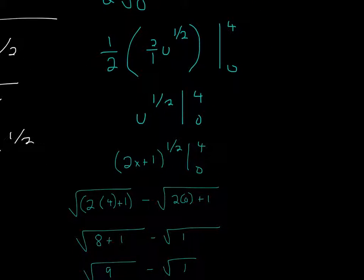What you'll do is evaluate at 4 and 0. You plug in the upper bound first. When you plug in 4, it's 2 times 4 plus 1, which equals 9. Then you'll subtract and plug the second number in.